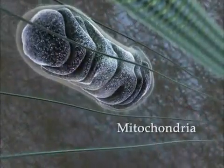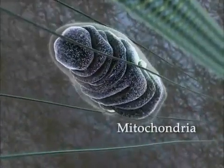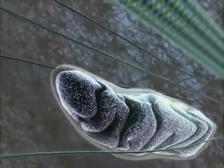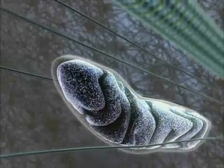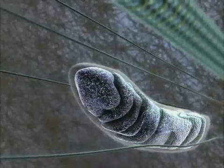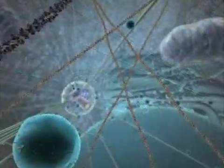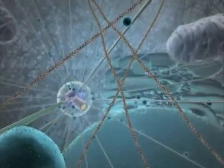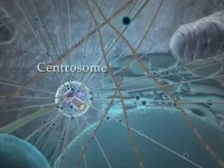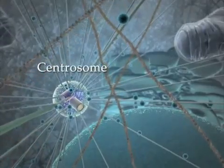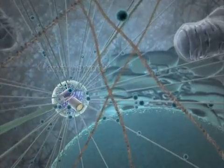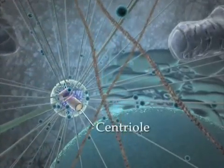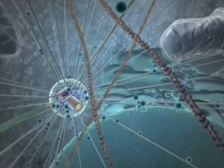Mitochondria change shape continuously, and their orientation is partly dictated by their interaction with microtubules. All the microtubules originate from the centrosome, a discrete fiber structure containing two orthogonal centrioles and located near the cell nucleus.